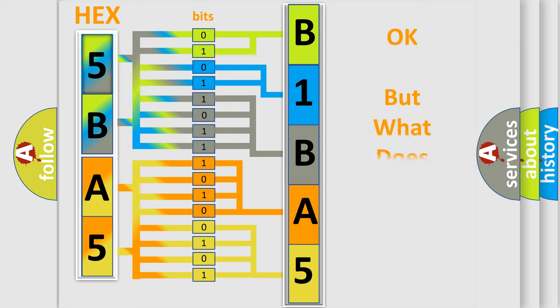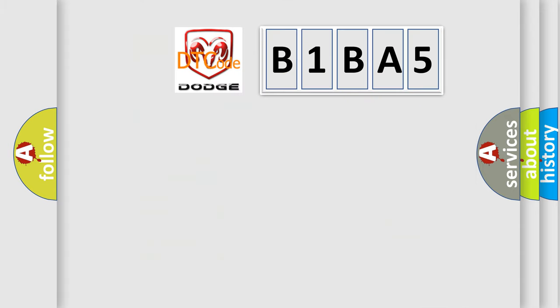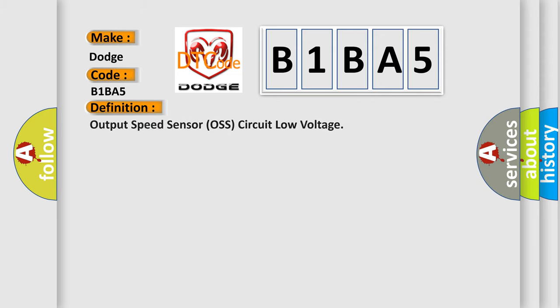We now know in what way the diagnostic tool translates the received information into a more comprehensible format. The number itself does not make sense to us if we cannot assign information about what it actually expresses. So, what does the diagnostic trouble code B1BA5 interpret specifically for Dodge car manufacturers?